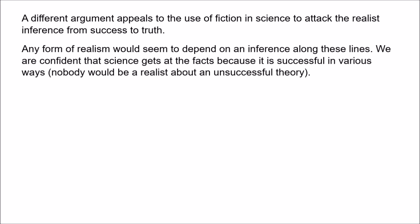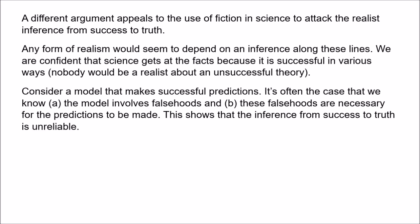It should be obvious how the use of fiction poses a problem here. Odenboe outlines the general problem as follows: we have a model which makes good predictions, so it's very successful. But we know, first of all, that the model is false — it involves falsehoods — and second, the falsehoods involved in the model are necessary for the predictions to come out correctly. The model is so successful precisely because there are falsehoods involved. So we can't infer from success to truth — success doesn't, in general, demonstrate truth.